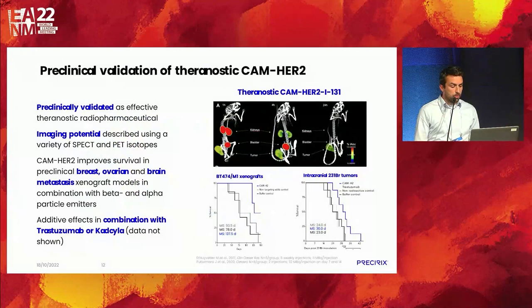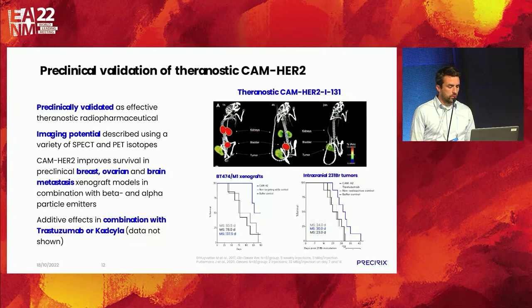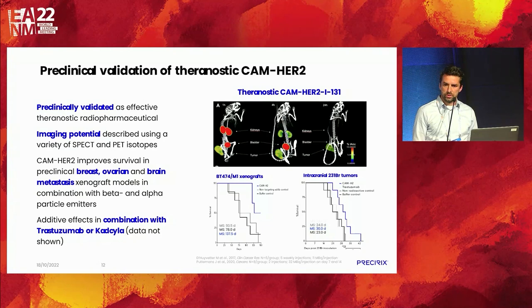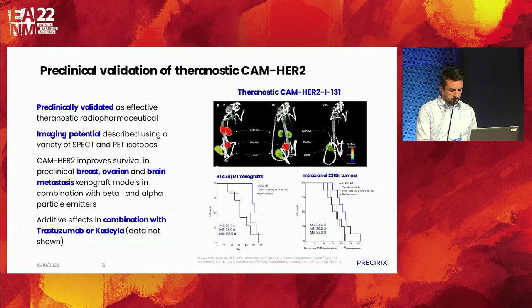The compound has been extensively evaluated preclinically for therapy, PET imaging, SPECT imaging, and additive effects with standard of care. The upper picture reflects the core technology: the iodinated HER2 compound shows fast on-target upon IV injection, with the tumor visible on the right hind leg. The unbound fraction is rapidly cleared from the bloodstream — at one hour post injection it is concentrated in kidneys, but after 24 hours everything is gone and the only thing remaining is specific retention in the tumor.